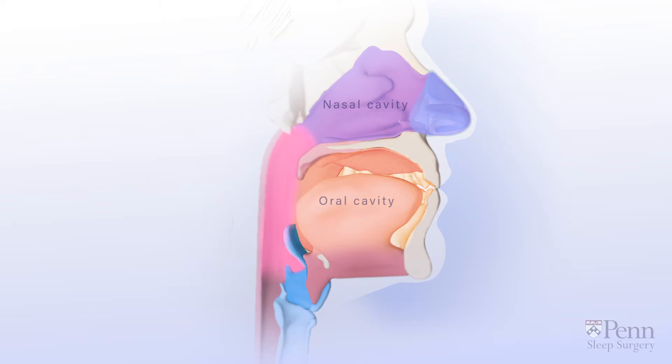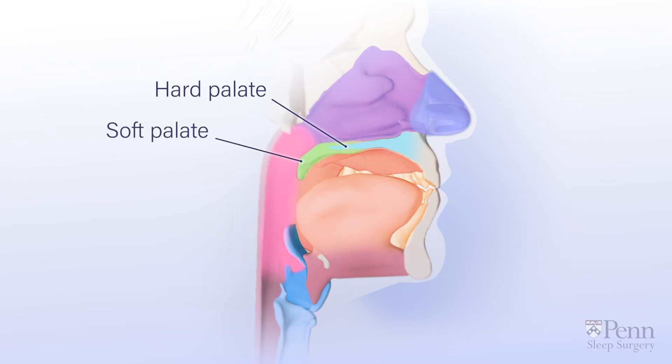The nasal cavity is separated from the oral cavity by a bony hard palate, which is part of the skull, and a soft palate, made of muscle.